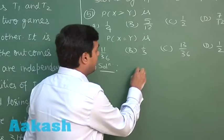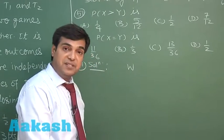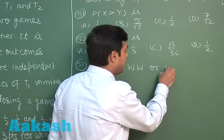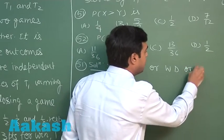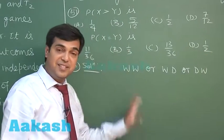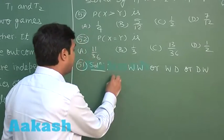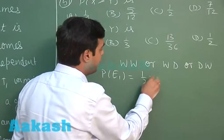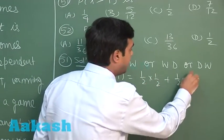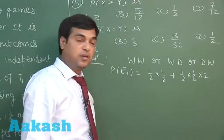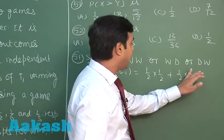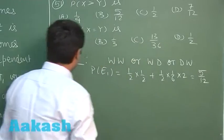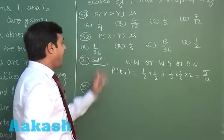X is greater than Y means team T1 wins game 1 and wins game 2, or wins then draws, or draws then wins. These are the three possibilities. So the required probability of event E1 is equal to (1/2)(1/2) plus (1/2)(1/6) multiplied by 2, which gives 1/4 plus 2/12, equal to 5/12.